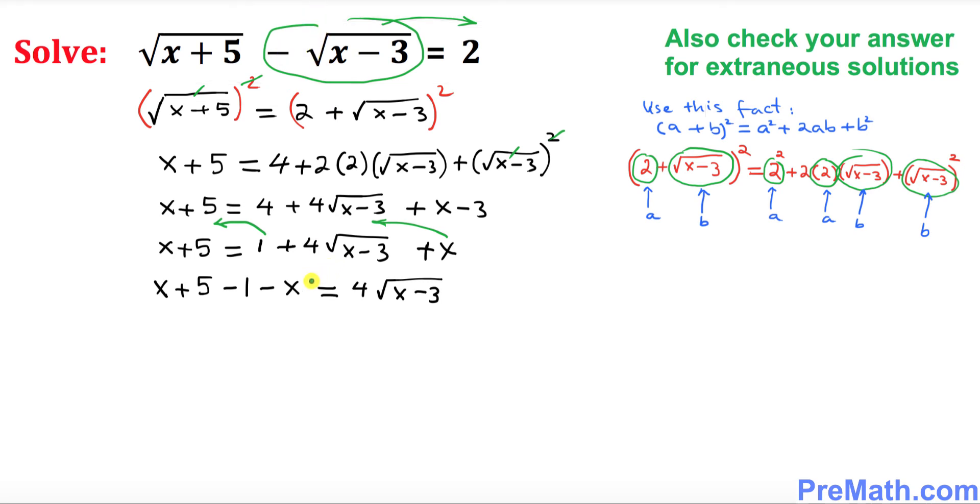Now you can see over here x and minus x they cross out so we simply 5 minus 1 is 4 equal to 4 times square root of x minus 3. Now the next thing what we want to do is I want you to divide both sides by 4. So this 4 and 4 become simply 1 and here 4 and 4 they cancel out so we ended up with square root of x minus 3.